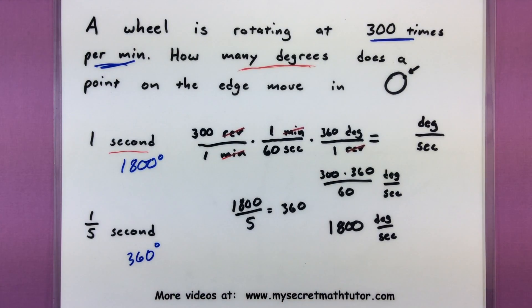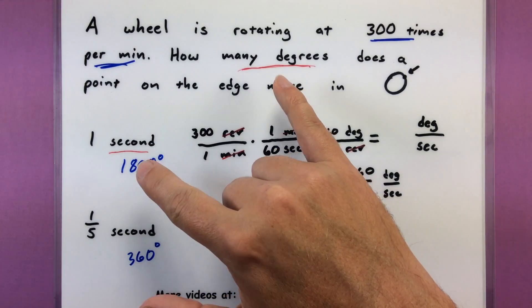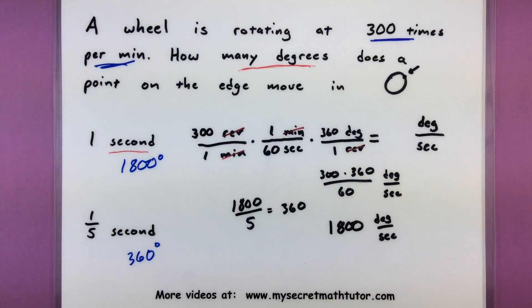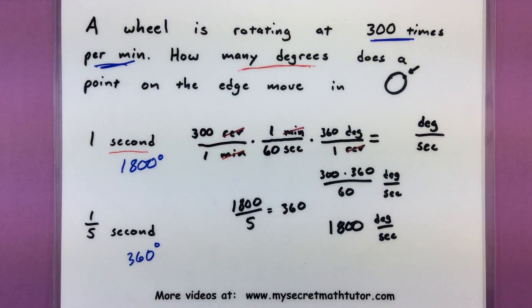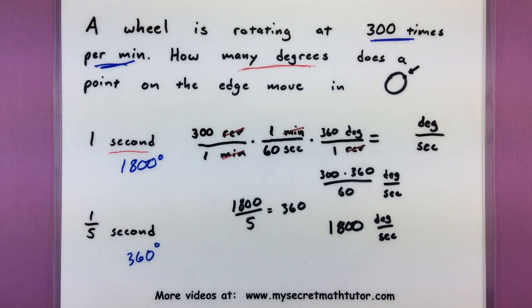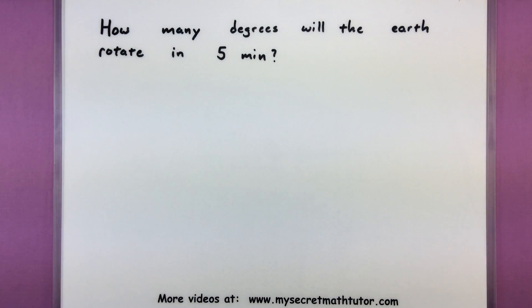So again, some key things you really want to take out of this is really take a look at your units that you're looking for, the answer to the problem, and look at what you're given so that you can go through that conversion process. We'll do this again. And then we'll get on to a tricky problem I've come across that I think you'll like.